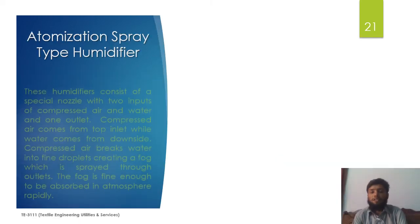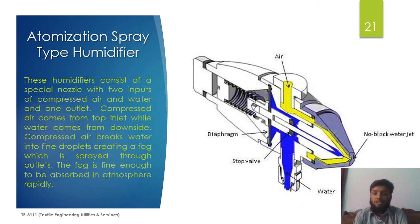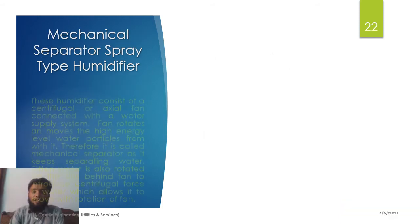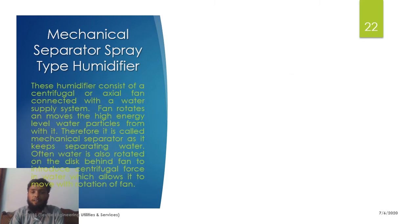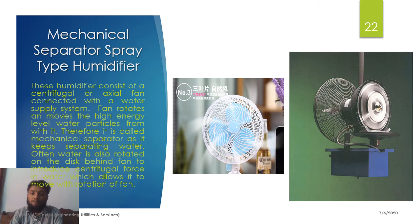The first type is the atomization spray type humidifier, which uses a combination of compressed air and water to produce a fine fog of water droplets that maintains the humidity of the environment. The second type is the mechanical splitter spray type humidifier, which uses centrifugal or axial fans and a rotating disc at the back that throws water in the form of droplets to maintain the humidity level.